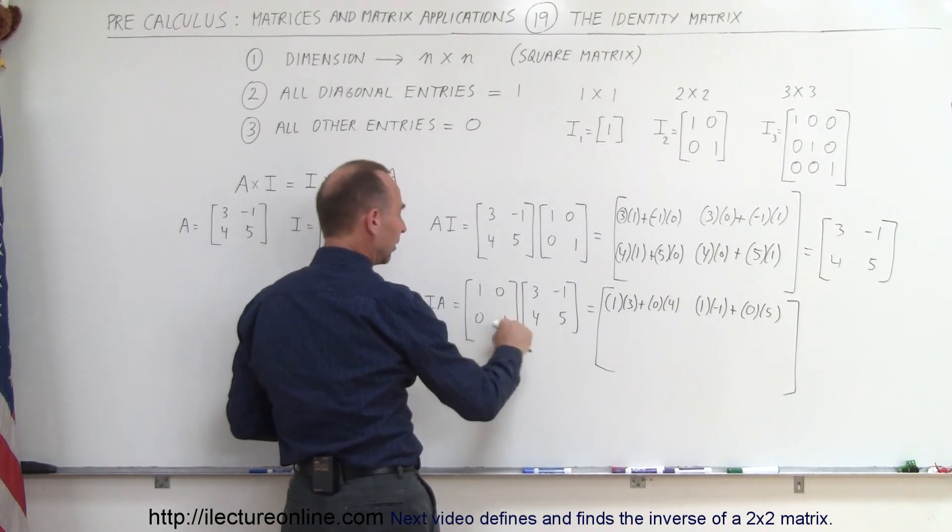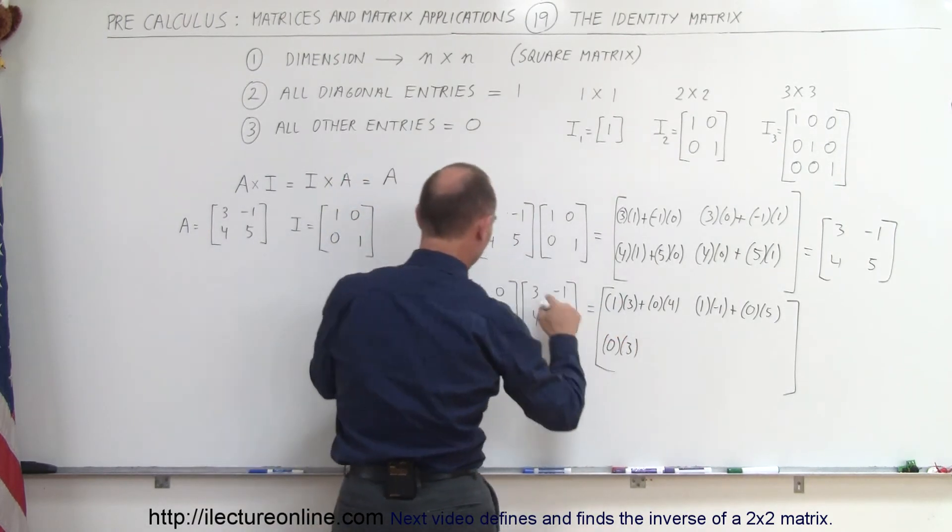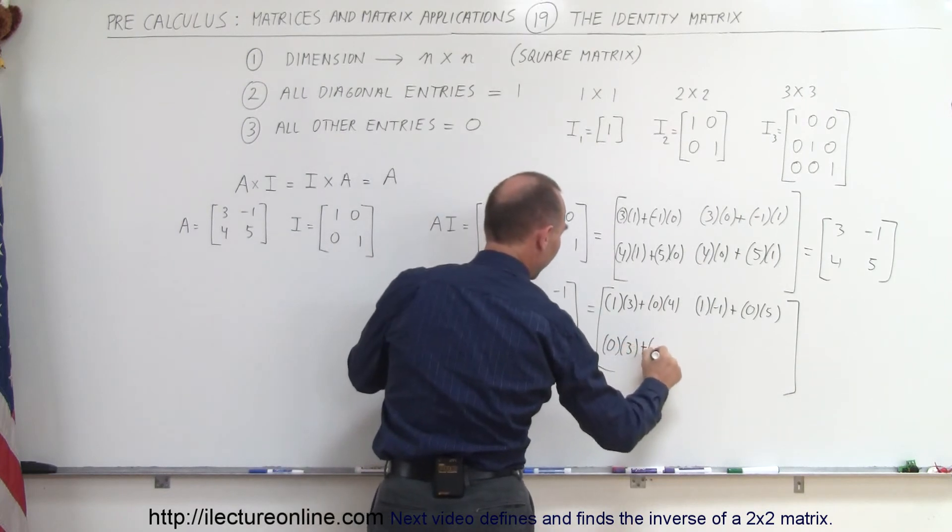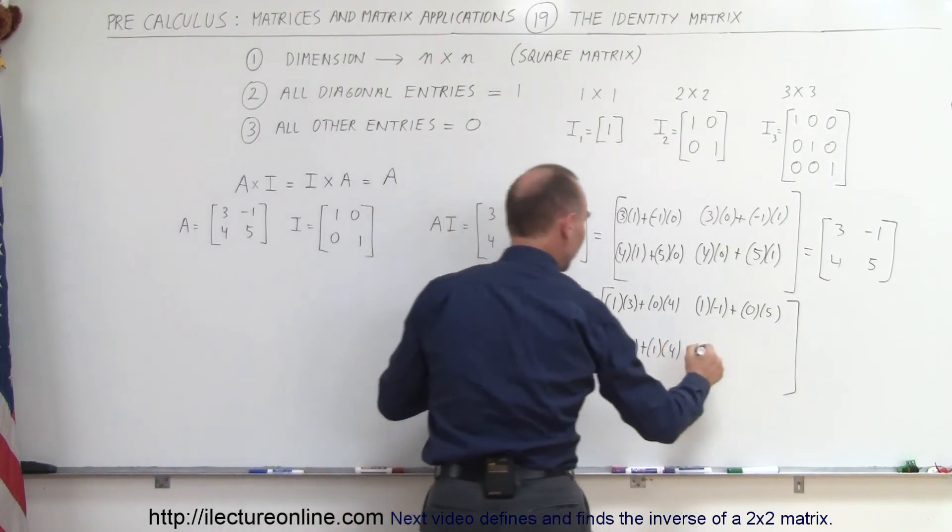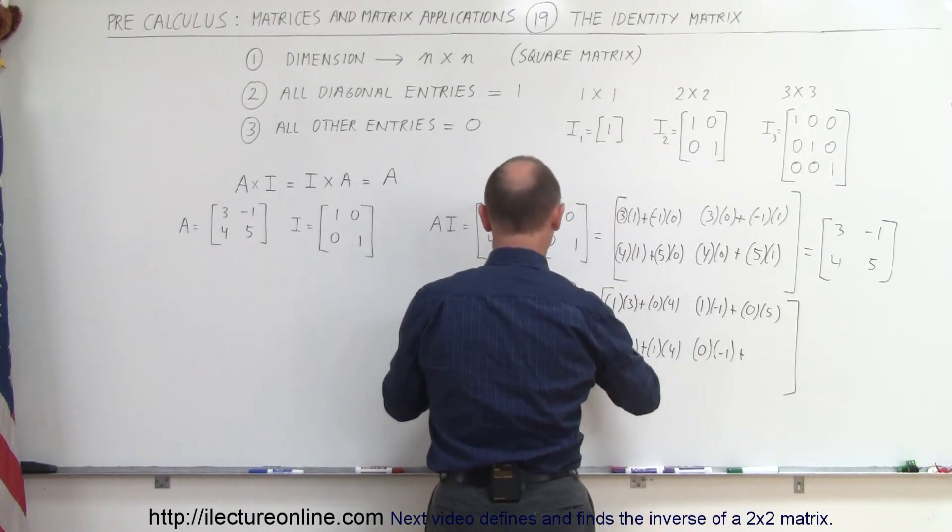For this element, we multiply this row times this column, so we get 0 times 3 and 1 times 4. And finally, this row times this column, so we get 0 times the negative 1 plus 1 times 5.